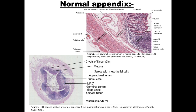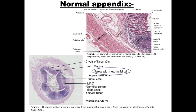The appendix is a worm-like diverticulum of the cecum. The inner lining that faces the lumen, the mucosa, is covered by glandular epithelium — crypts lined with simple columnar epithelium as well as goblet cells that produce mucin. Distributed throughout the epithelium are micro-fold cells, which are involved in endocytosis of antigens to immune cells from the lumen. The appendix is made up of an inner layer of mucosa with submucosa, muscularis externa, and serous layer.